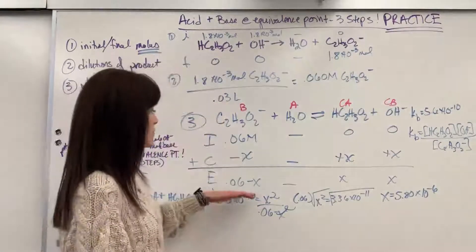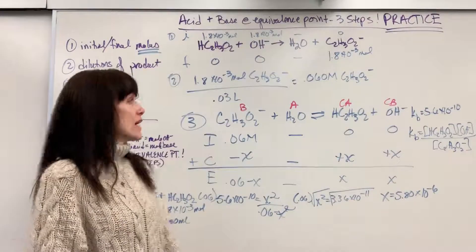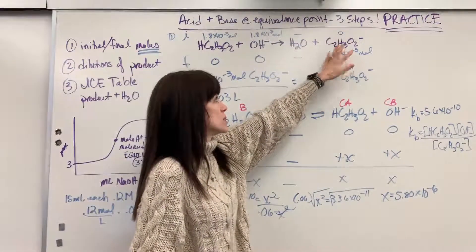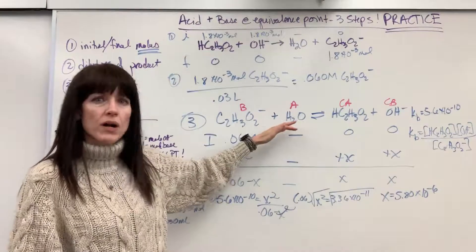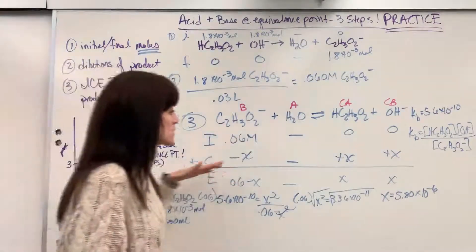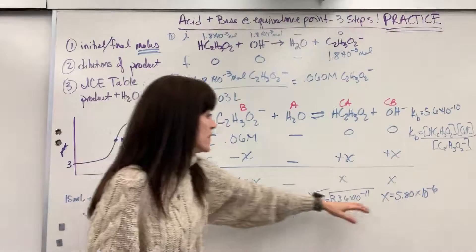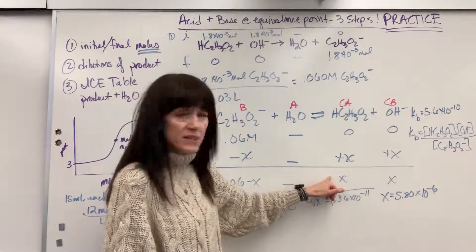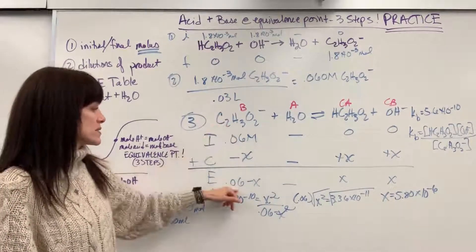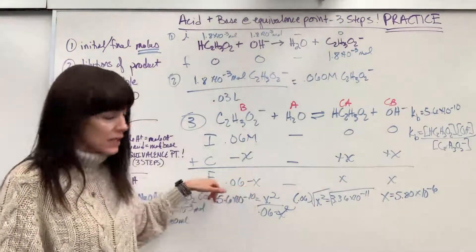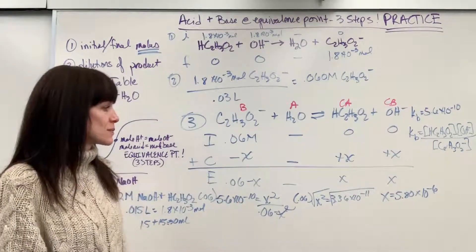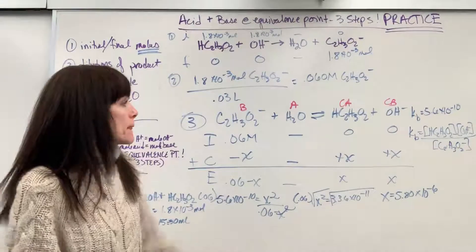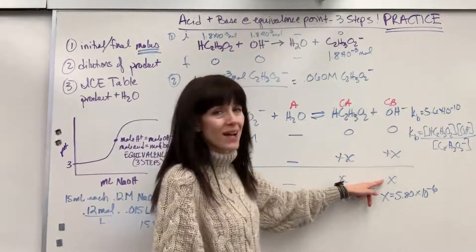So we now have found the concentrations at equilibrium. Finally, we had this reaction happen. We had the acetate ion produced. The acetate ion then reacted partially with water because it's a weak base. And here's finally what we have at equilibrium. We're going to have 5 times 10 to the minus 6 of the hydroxide and the acetic acid. And we're going to have 0.06 of the acetate because that x is so small. Again, when you subtract it, it rounds to 0.06 for sig figs. Now, the question was, what is the pH? Check it out. OH is x.